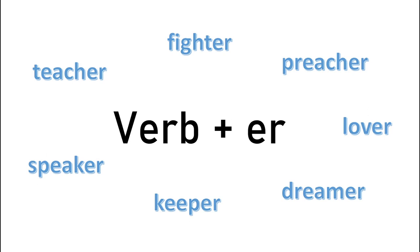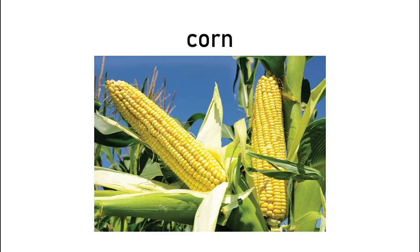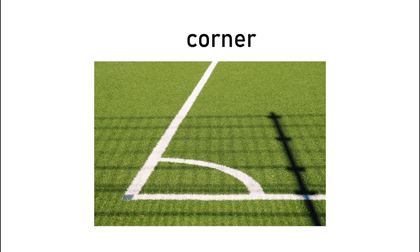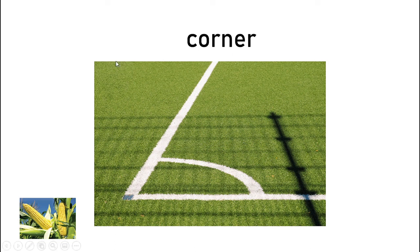You most likely know this word: corn. But how about if we add an -er — corner? Though you may never think about corn when you see the word corner, research has shown that we do subconsciously think about corn a little bit when we see the word corner. This is because, for a split second, our mind erroneously parses corner into corn plus -er, even though we never fully become aware of the fact.